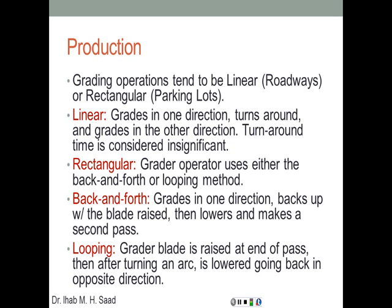The rectangular mode can be divided into two methods: back-and-forth or the looping method. In back-and-forth, the grader moves forward, then lifts the blade, goes backward to the starting point, moves sideways, and makes another pass. In the looping method, the grader moves forward until it reaches the end, lifts the blade, turns around, lowers the blade again, and goes in the opposite direction — always moving forward in a loop until the loop is closed.